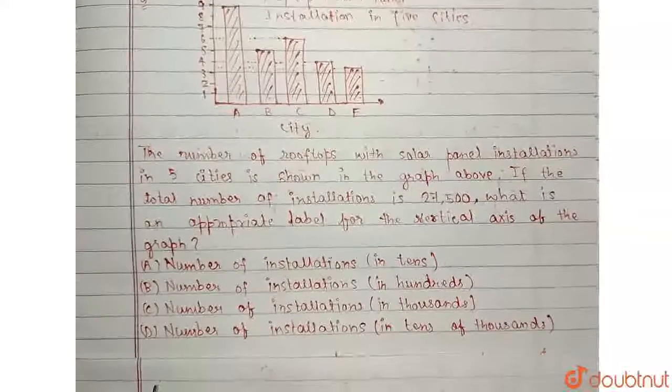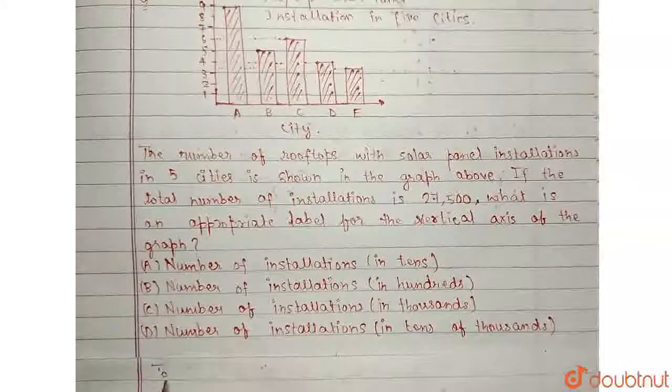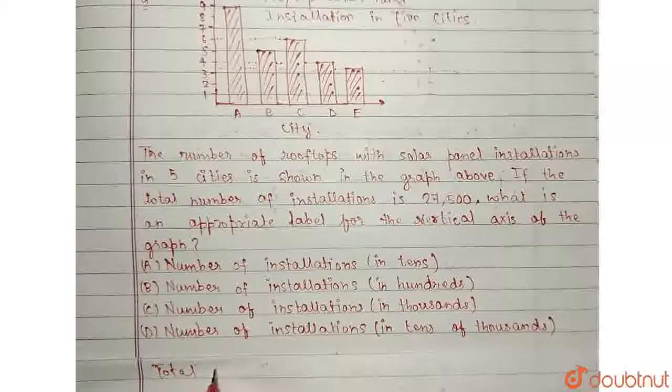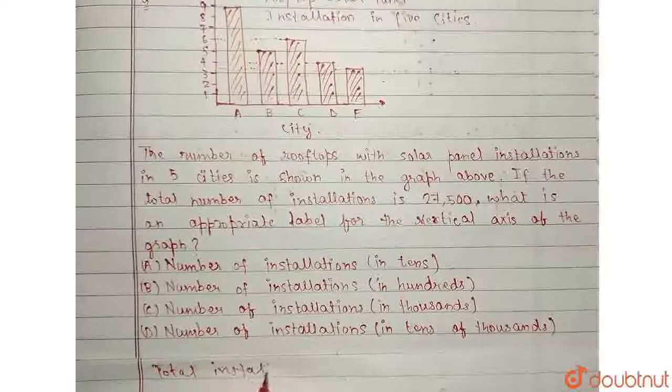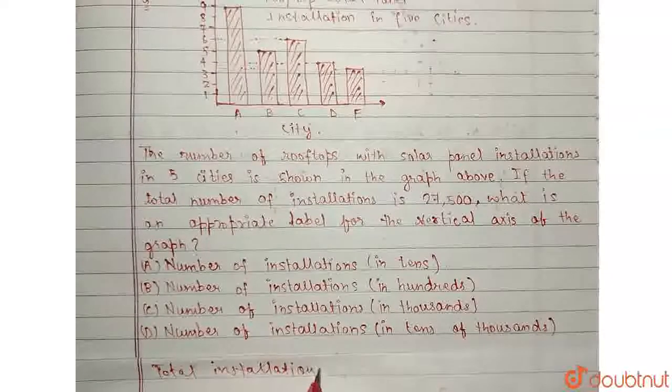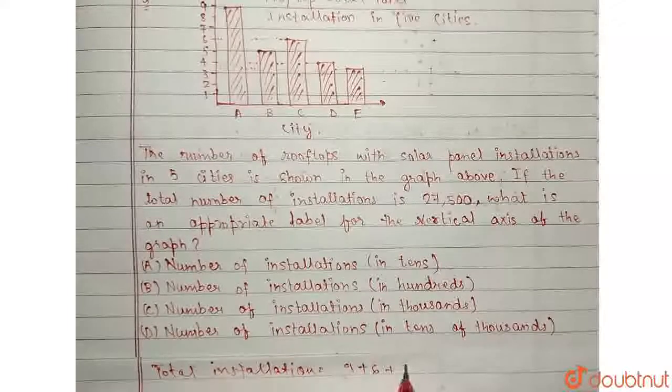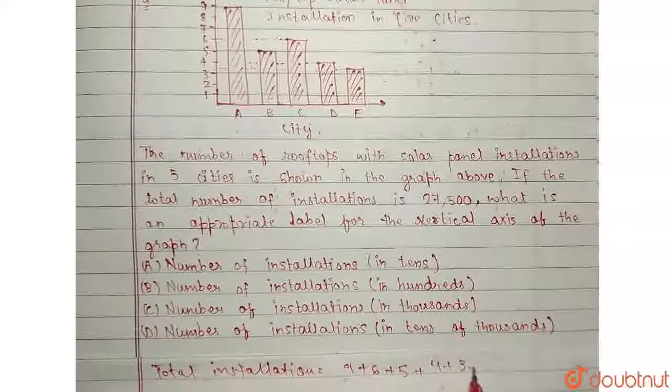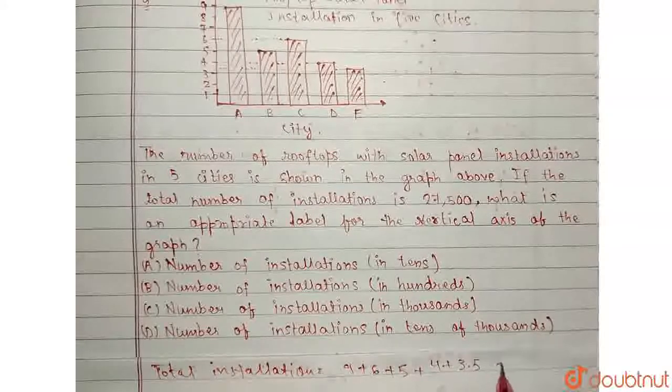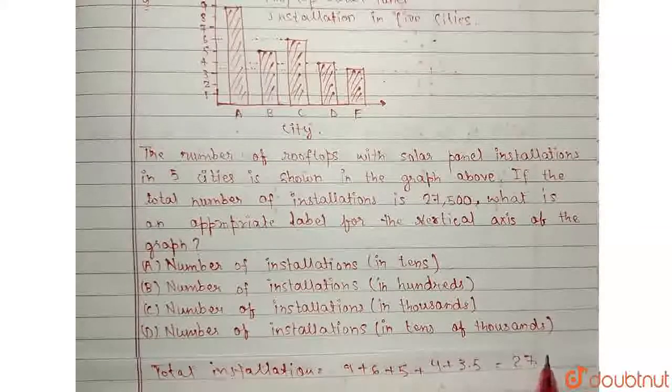Okay, adding all of these 5, I will get the total installation is equal to 9 plus 6 plus 5 plus 4 plus 3.5, which is equal to 27.5.